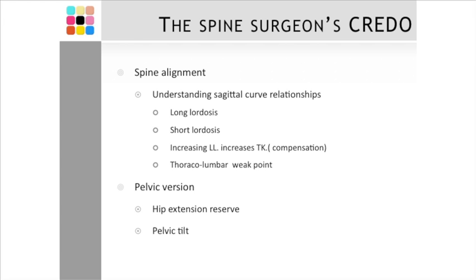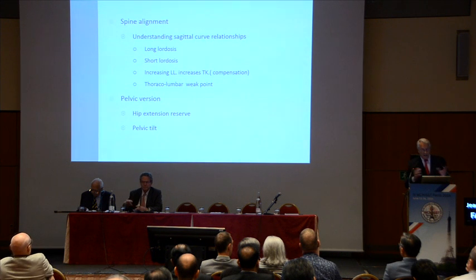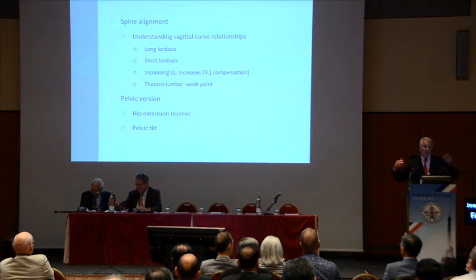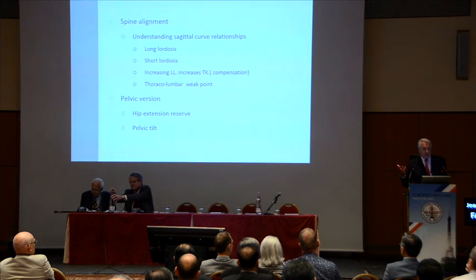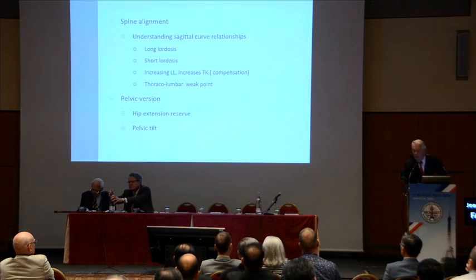Spine alignment — understanding spine curve relationships: long lordosis, short lordosis, increasing lordosis, increasing kyphosis in the thoracic spine. And we have to know, and that has to be kept in our mind, that those two things cannot be seen separately from one another. If you just want to increase the lordosis, you may perhaps have an increase of the kyphosis above, mainly at the weak point, which is the thoracolumbar junction.